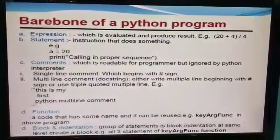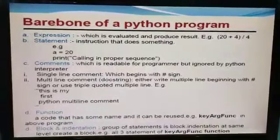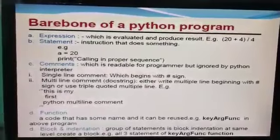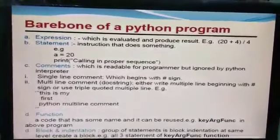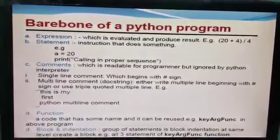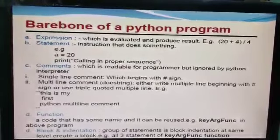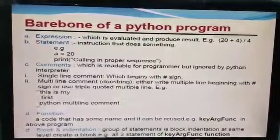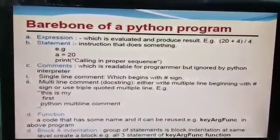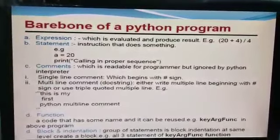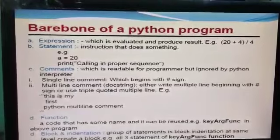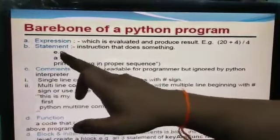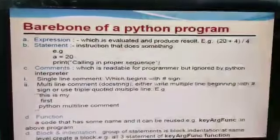Next is statement — instructions that do something. Here you can see: a equals 20, and then print, calling in proper sequence. We have given a print message and then another print message. So these are the statements. If it is just a equals 20, this is also an expression. Here it is a collection, so these are two statements.